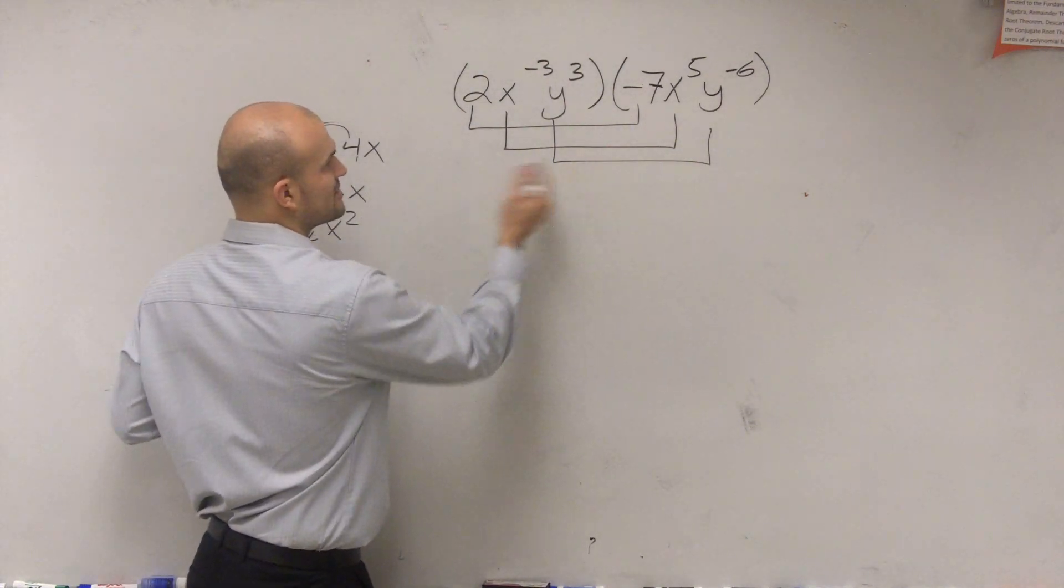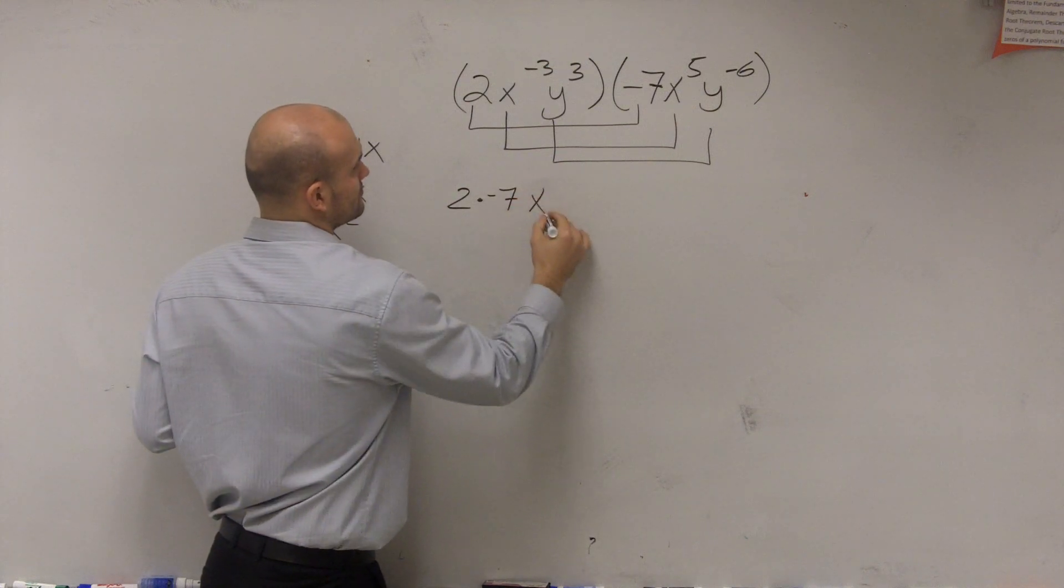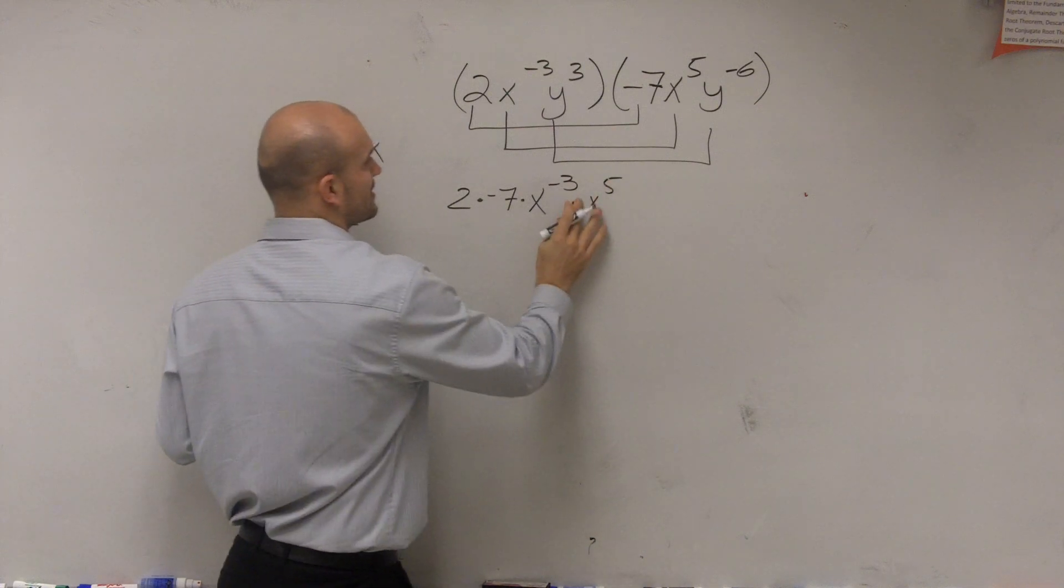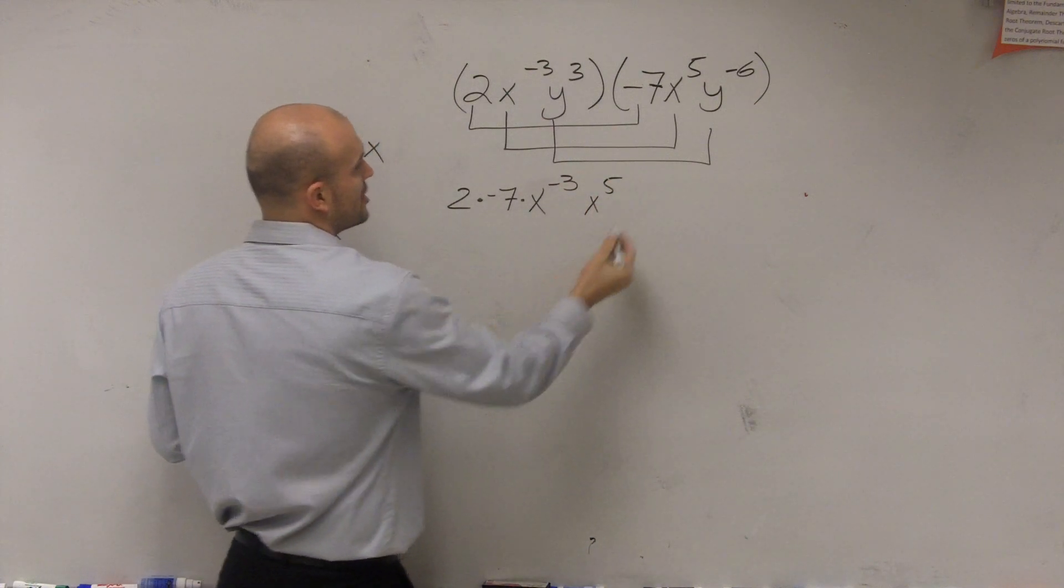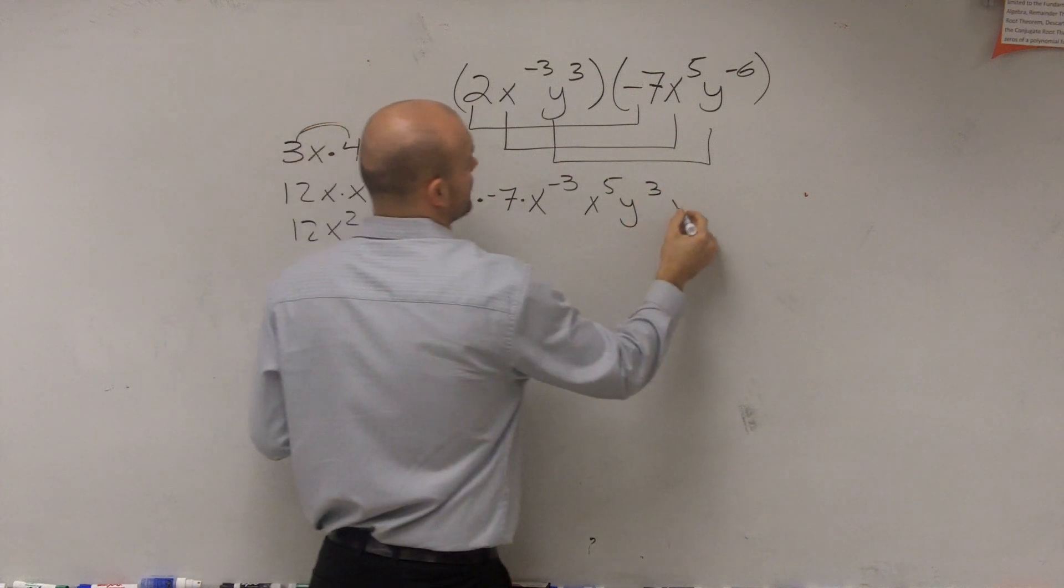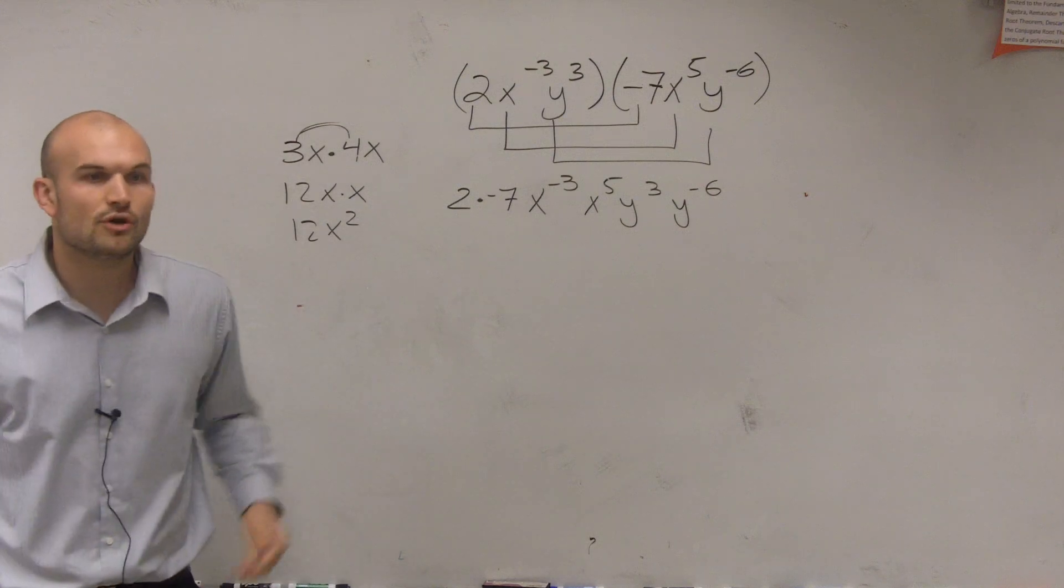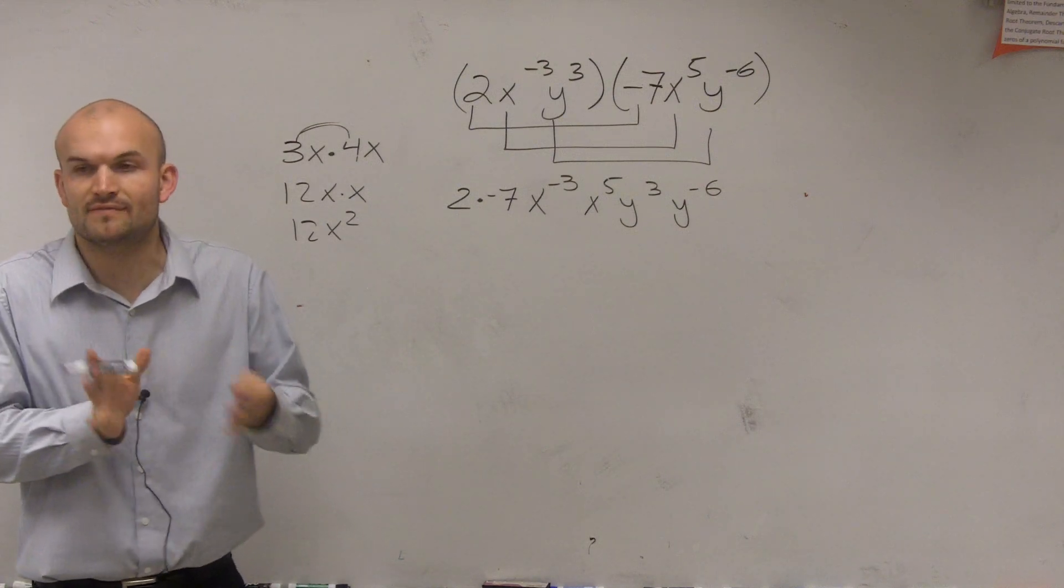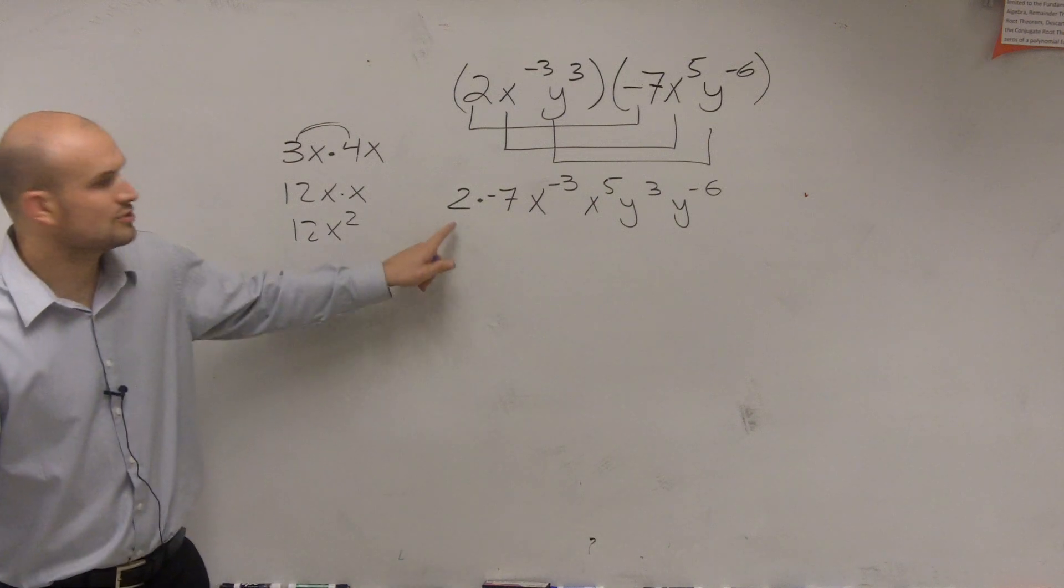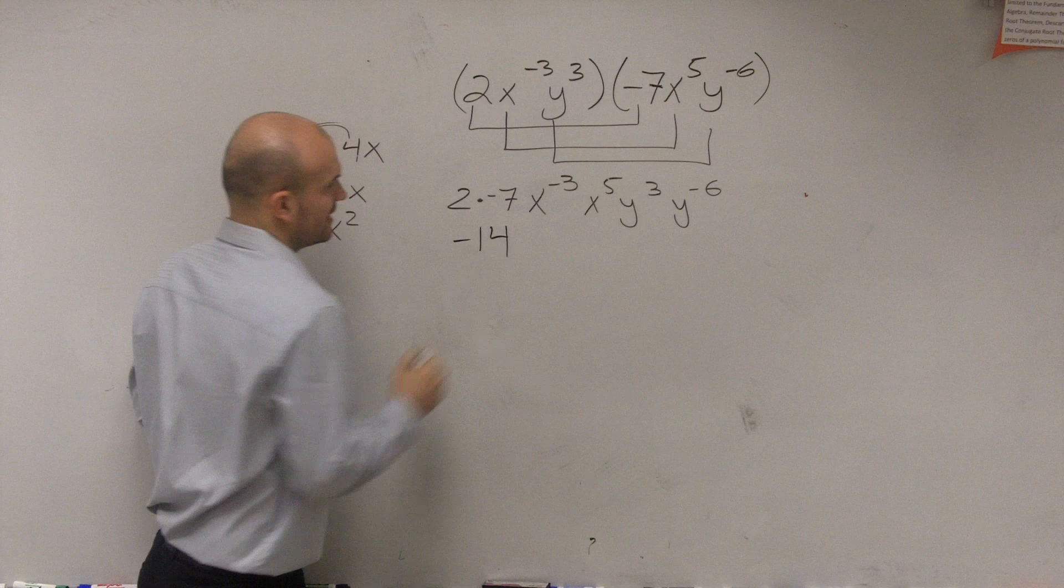So here, I'm just going to rewrite this: 2 times negative 7 times x to the negative 3rd times x to the 5th. Actually, I probably don't need to write it in there. We already know. And then times y cubed times y to the negative 6th. So you're only going to multiply the ones that have the same base, and those are the ones you can apply the properties to. So 2 times negative 7, pretty basic, negative 14.